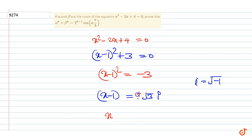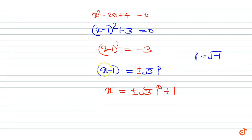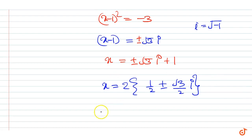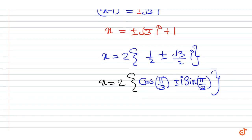Therefore x = 2 · (1/2 ± (√3/2) · i), or we can write x = 2 · (cos(π/3) ± i·sin(π/3)).